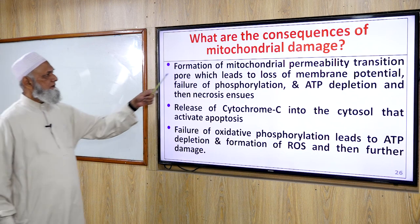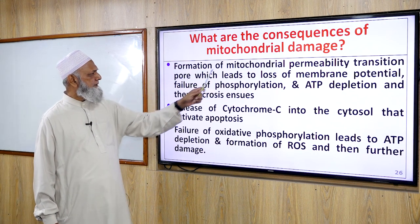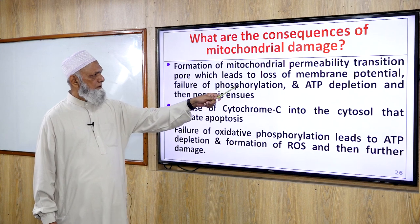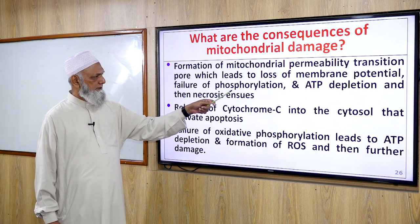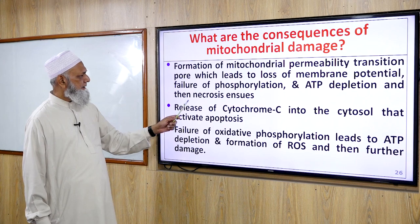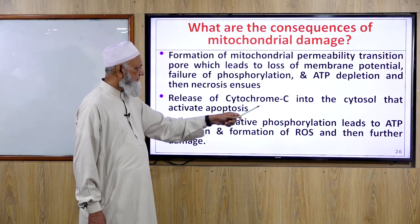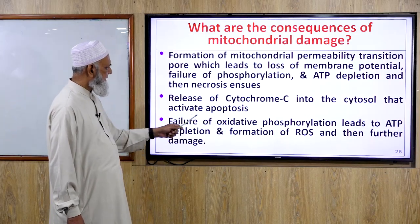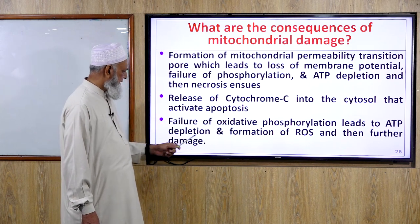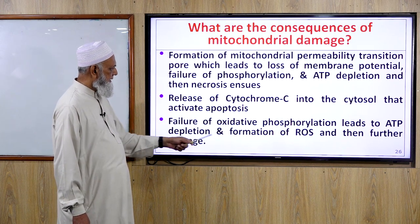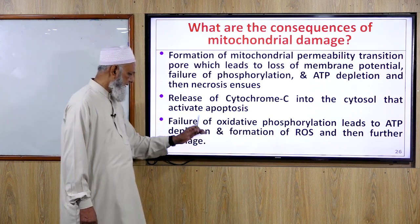Consequences of mitochondrial damage: formation of mitochondrial permeability transition pore leads to loss of membrane potential, failure of phosphorylation, ATP depletion, and necrosis. Release of cytochrome C into the cytosol activates apoptosis. Failure of oxidative phosphorylation leads to ATP depletion, formation of reactive oxygen species, and further damage.